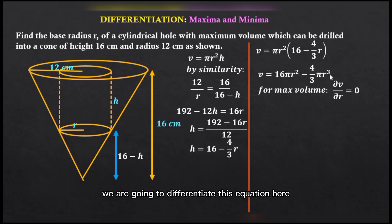So we are going to differentiate this equation here, that is the derivative of v with respect to r. Differentiating the first term of the right hand side, that is 16πr², we'll have 32πr, and then the second term we will have -4πr², and then we equate to zero.